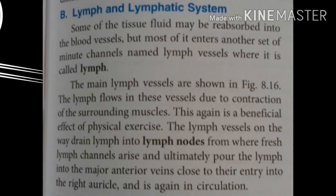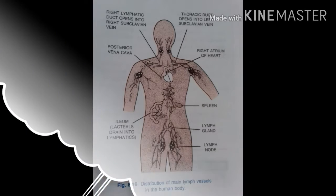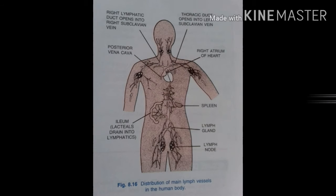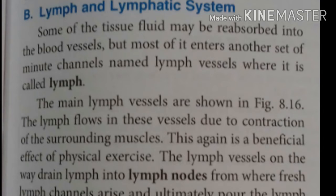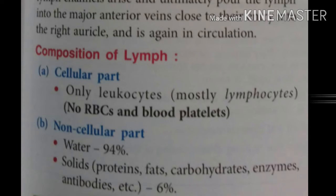The lymph circulatory system includes lymph vessels, capillaries, lymph nodes, and lymph glands. The main lymph vessels are shown in the figure. Lymph flows in these vessels due to the contraction of surrounding muscles, which is a beneficial effect of physical exercise. The lymph vessels drain lymph into lymph nodes, from where fresh lymph channels arise and ultimately pour the lymph into the major anterior veins close to their entry into the right auricle, returning it to circulation.